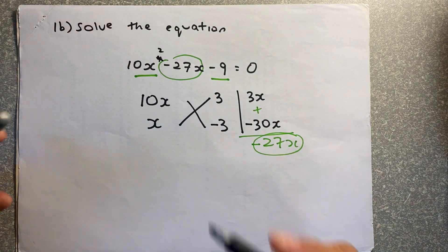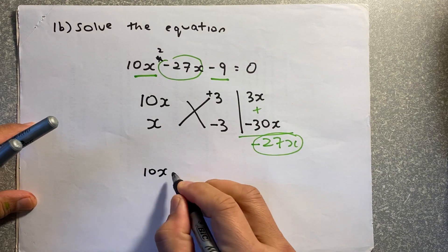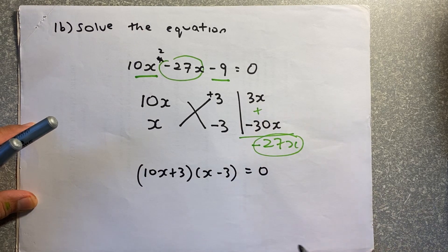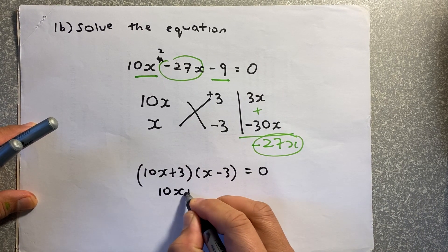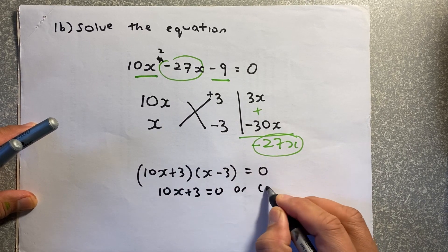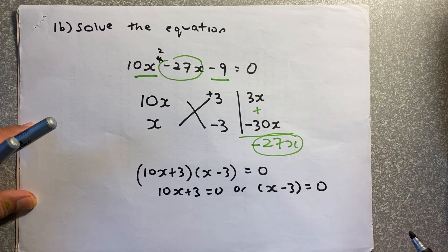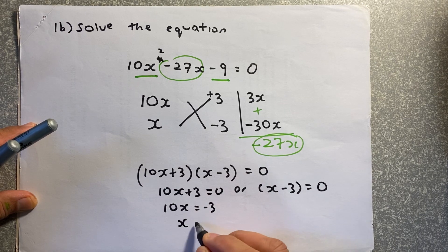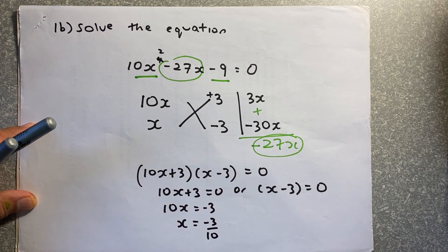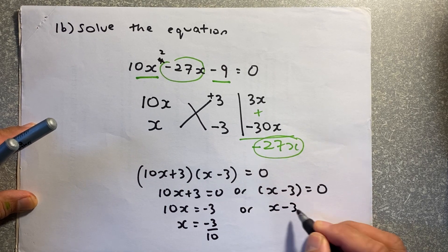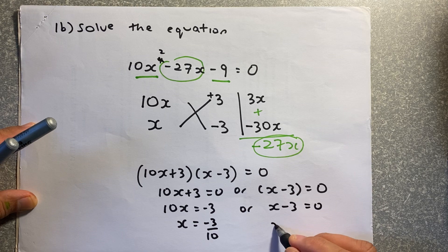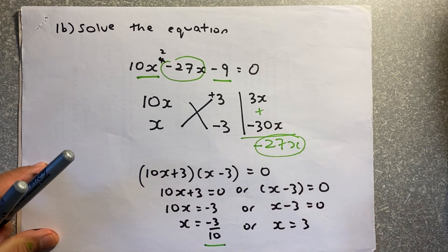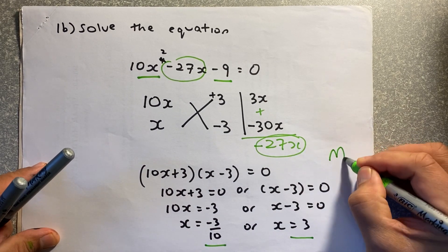The factorized version is (10x + 3)(x − 3) = 0. Solving: set 10x + 3 = 0, giving x = −3/10; and x − 3 = 0, giving x = 3. So the answer is x = −3/10 or x = 3. That will give you a merit.